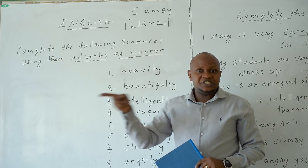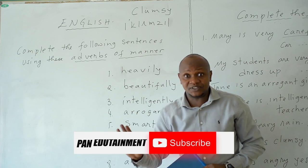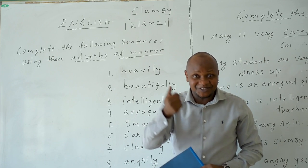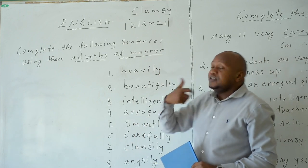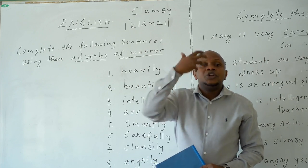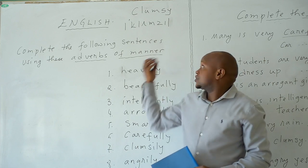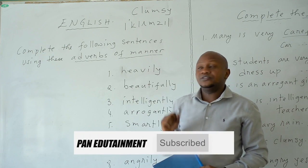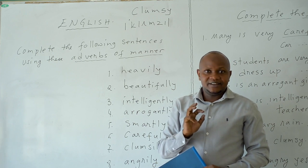For example: 'This person is very clumsy.' 'Your cousin is clumsy.' When you talk about someone who is clumsy, that person is called a clumsy person. 'These people are clumsy.'